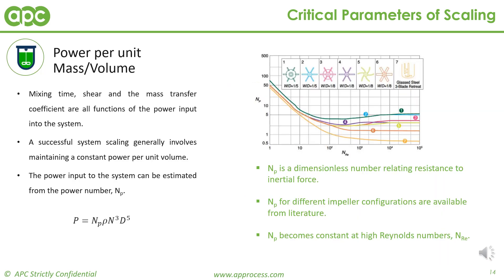A successful system scaling generally involves a constant power per unit volume. Power can be input into the system through an impeller. The equation describing the power requirement is a function of the power number N_p, the density rho, the agitation rate N, and the impeller diameter D — where agitation rate is to the power of 3 and impeller diameter is to the power of 5. This non-linear relationship explains why agitation rate is not a scalable parameter. The power number is a dimensionless number used to predict power input; it is unique to the impeller and becomes constant at high impeller Reynolds numbers.